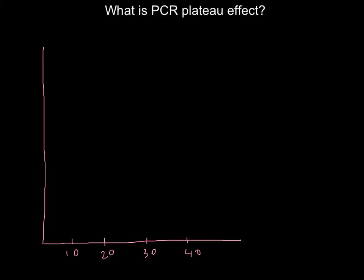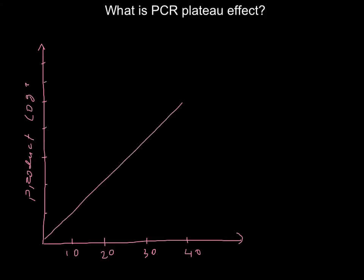We usually don't go more than 40 thermocycles. On the vertical axis we have accumulation of the desirable product, on a log 2 scale. Our theoretical yield should look something like this — an exponential curve, labeled 'theoretical yield'.